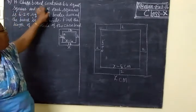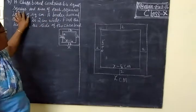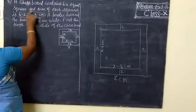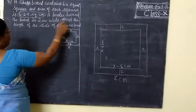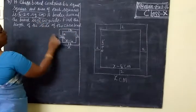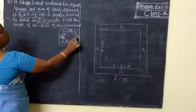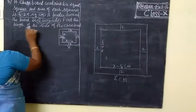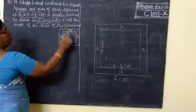Here, the board contains 64 equal squares and the area of each square is 6.25 square centimeters. The border around the board is 2 centimeters wide. Find the length of the side of the chessboard.